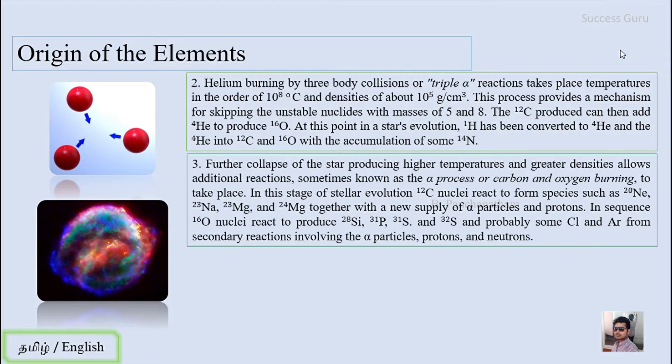Further collapse of the star produces higher temperature and greater density, allowing additional reactions to take place as alpha process or carbon and oxygen burning process in the stage of stellar evolution. Carbon-12 nuclei react to form species such as neon, sodium, magnesium, together with a new supply of alpha particles and protons. In the sequence, oxygen-oxygen nuclei react to produce silicon, phosphorus, sulfur, and probably chlorine and argon from secondary reactions involving alpha particles, protons, and neutrons.